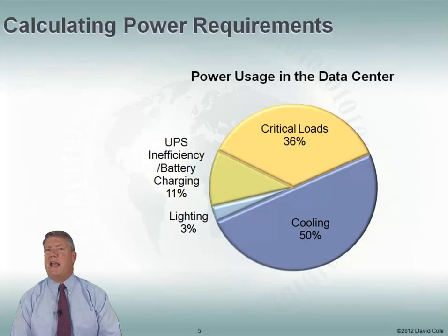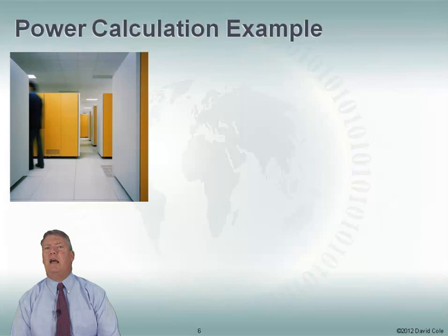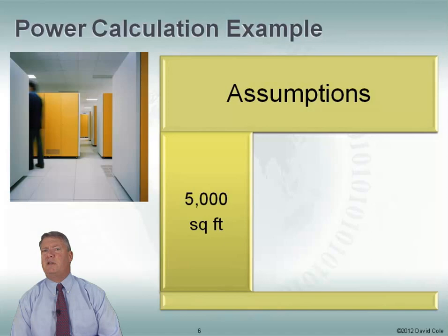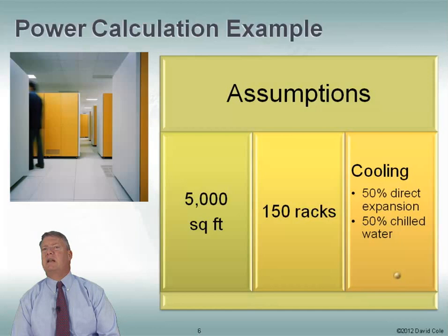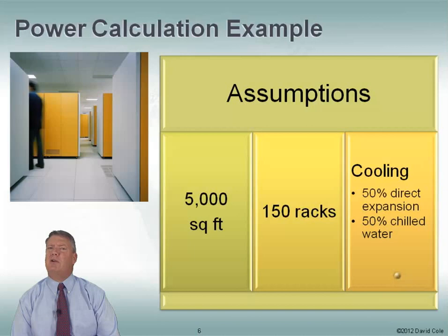Let's go through an example of what a typical data center design company would use to calculate your power. We have to start with some assumptions. Let's assume we're going to have a 5,000 square foot data center, put 150 racks in there, and half of our cooling is going to be direct expansion and half is going to be chilled water. There is a difference in costs for different types of cooling strategies.